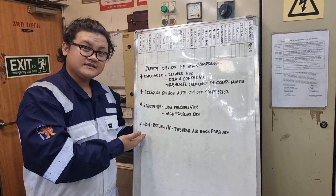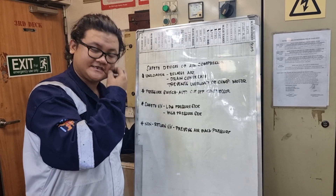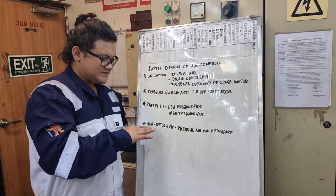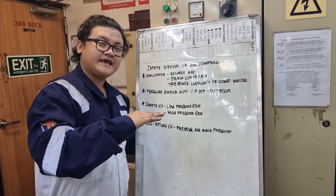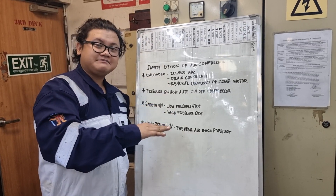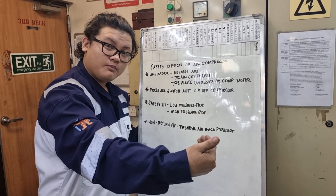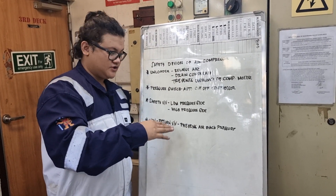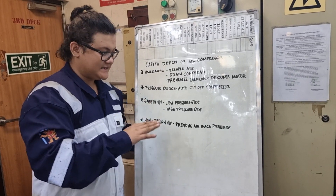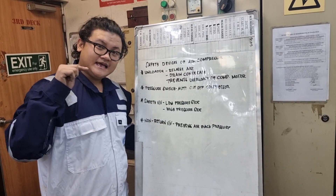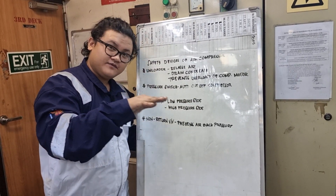Fourth one, non-return valve. This valve is located at the discharge side of the compressor. Once the compressor starts supplying air to the air bottle, there's a possibility that there will be back pressure of the air that might go back to the compressor. So that's the reason why non-return valve is installed — to prevent it from happening. Non-return valve only allows one direction of the air flowing in that valve.